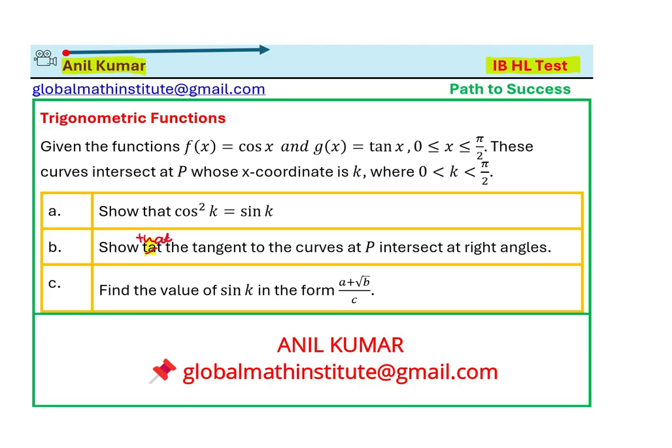So we are given two functions which are intersecting at point P and their x-coordinate is k. We need to show that cos²k equals sin k.